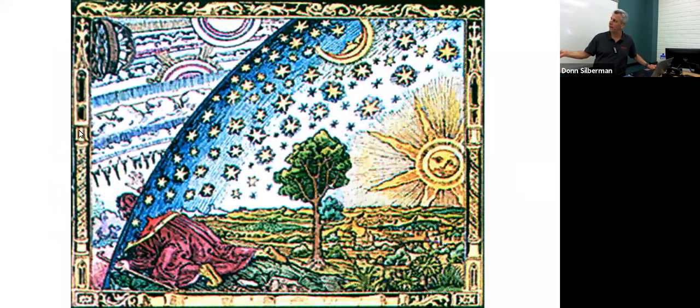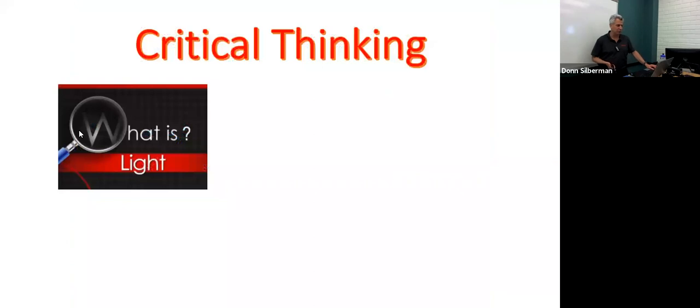This is a man in medieval times. It's a medieval woodcut. And he's putting his head through the sphere of the stars to see what's behind the stars, right? Of course, the earth is flat. There's the sun. There's the moon. And he wanted to find out about the stars, right? So how did humans in history get to be where we are today? Curiosity, right?